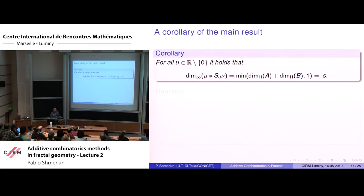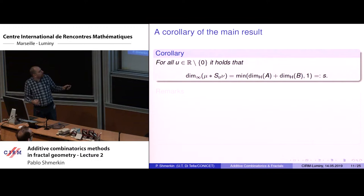Here is the corollary of the main result. We have the natural measure on one Cantor set, the natural measure on another, scaled by any non-zero real number. The Frostman exponent is the minimum between the sum of the dimensions of the Cantor sets and 1. I call this number S.